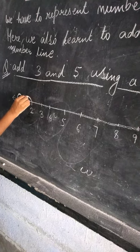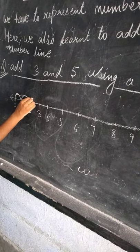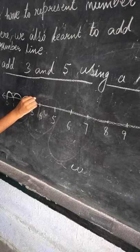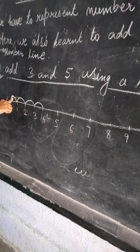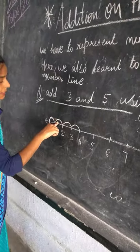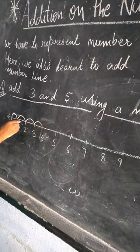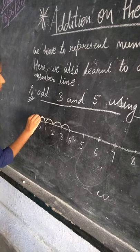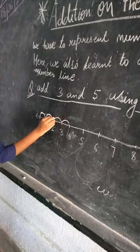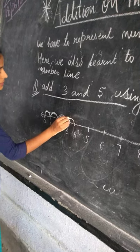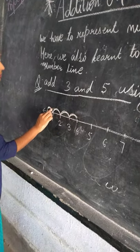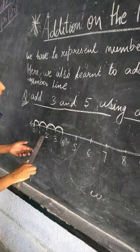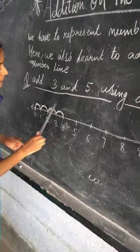Zero, one, two, three. Start from zero and move forward three — zero se start karo aur teen tak jao. One, two, three. Okay.